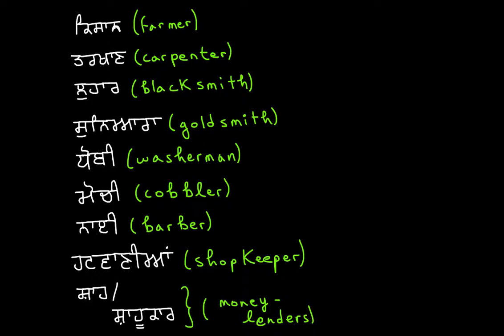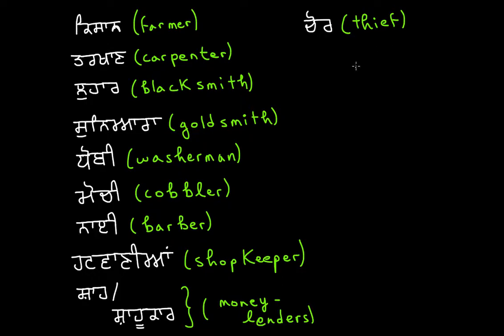Let's talk about a thief, since we're talking about occupations. A thief would be called a Chor. A Chor is a Chacha with a Hora and a Rah — Chor. This would be what we call a thief. Let's also mention that a robber is called a Lutera. Lutera: with the Ankar there, we have a Tainka, a Lama, a Rara, a Kanna with no Bindi — Lutera would be a robber. These two are connected.